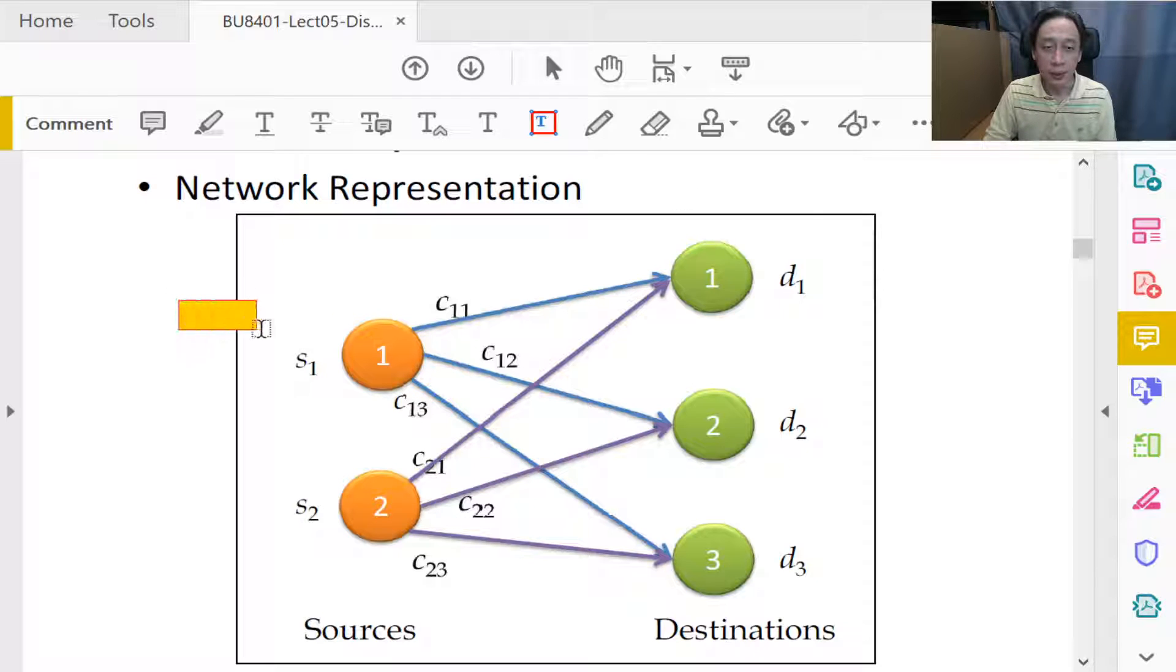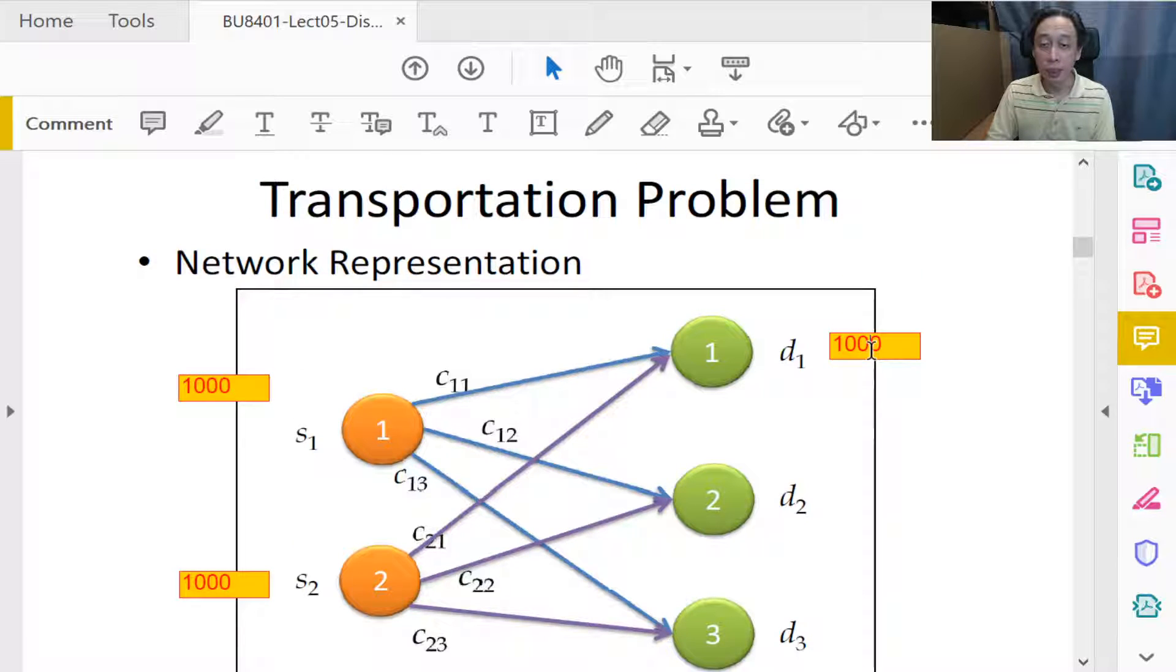We can just give some numbers. For example, the capacities of factory one can be one thousand, and for factory two similarly one thousand. We can also have customers, any number of customers, each customer being characterized by its demand for the single SKU that's being transported. So customer one could want 200 cans, customer two 300 cans, and customer three let's just say 400 cans.